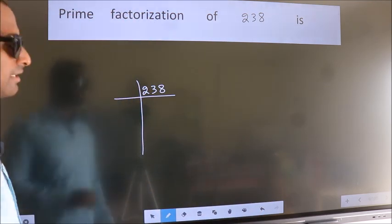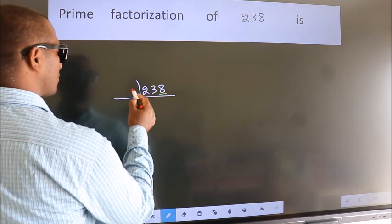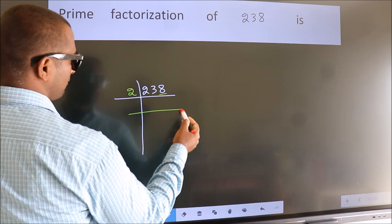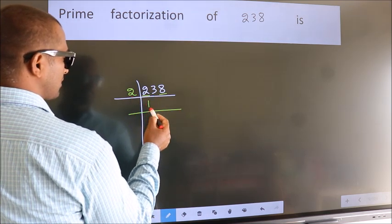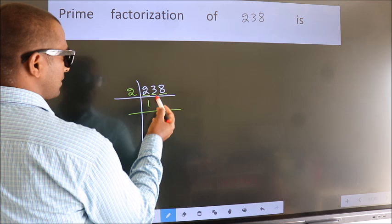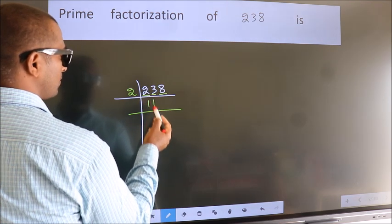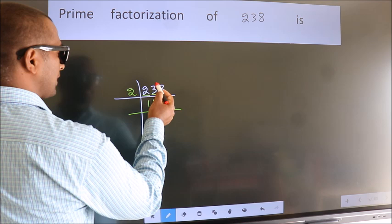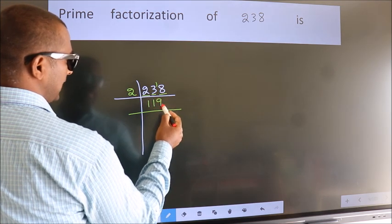Next, in this number, last digit 8, even number, so take 2. First number 2. When do we get 2 in 2 table? 2 ones 2. The other number 3. A number close to 3 in 2 table is 2 ones 2. 3 minus 2 is 1, 1 carried forward 18. When do we get 18 in 2 table? 2 nines 18.